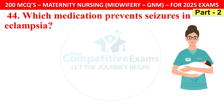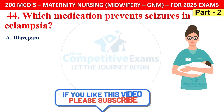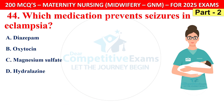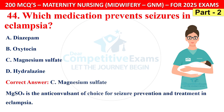Question 44: Which medication prevents seizures in eclampsia? Options are diazepam, oxytocin, magnesium sulphate, or hydralazine. The correct answer is C — magnesium sulphate. Magnesium sulphate is the anticonvulsant of choice for seizure prevention and treatment in eclampsia.